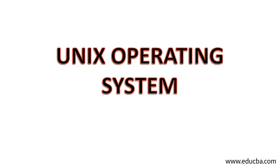Now we come to Unix. Unix is a version of operating system. It was developed in 1969 in AT&T Bell Laboratories by Dennis Ritchie. This system has something different from Windows — it supports multi-user, meaning multiple users can be logged in at the same time, and it supports multitasking. We will see many things in detail.